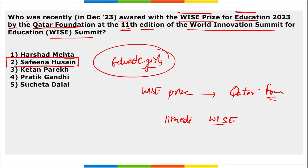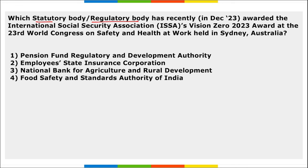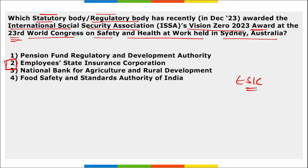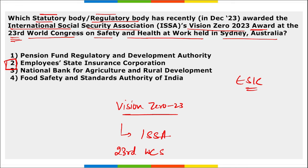Which statutory body has recently awarded the International Social Security Association's Vision Zero 2023 award at the 23rd World Congress on Safety and Health at Work in Sydney, Australia? It is the Employees' State Insurance Corporation — ESIC. They were awarded the Vision Zero Award by the International Social Security Association during the 23rd World Congress on Safety and Health at Work, held in Sydney, Australia.